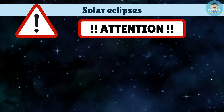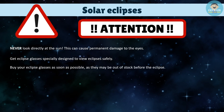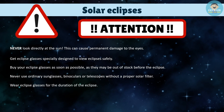Attention! If you plan to observe a solar eclipse, be careful. Never look directly at the Sun — this can cause permanent damage to the eyes. Get eclipse glasses specially designed to view eclipses safely, and buy them as soon as possible as they may be out of stock before the eclipse. Never use ordinary sunglasses, binoculars, or telescopes without a proper solar filter. Wear eclipse glasses for the duration of the eclipse and supervise children to make sure they wear eclipse glasses too. No glasses, no eclipse — good observation!